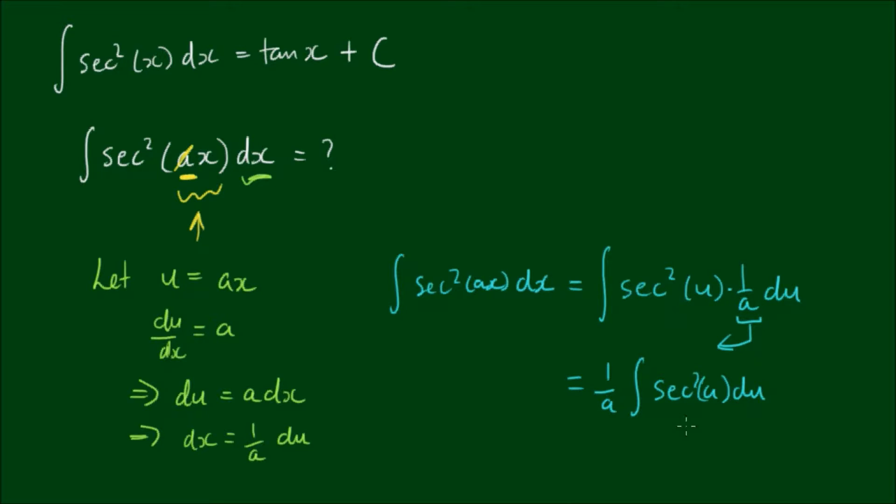So is this now an integral that we can find the expression to? And the answer is yes. So if the integral of sec squared dx is equal to tan x, then it would follow that the integral of sec squared u du is equal to tan u plus an integration constant.